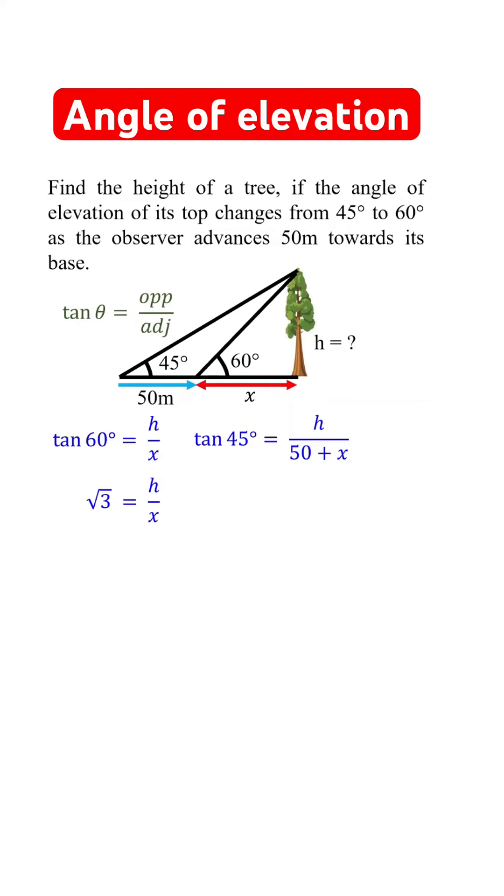Tangent 60 degrees is square root of 3. From this, x equals h over square root of 3. Tangent 45 degrees is 1. From this, h equals 50 plus x.